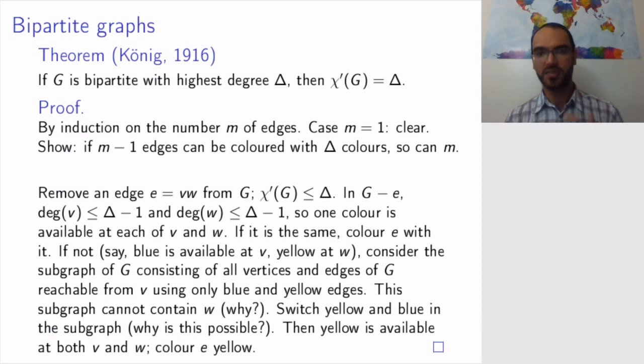This was a bit of a tricky proof, but it shows that a bipartite graph can be colored with the same number of colors as the highest vertex degree.